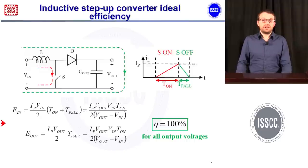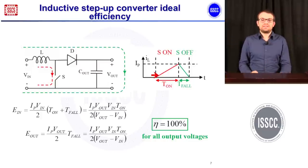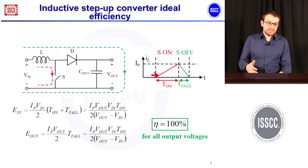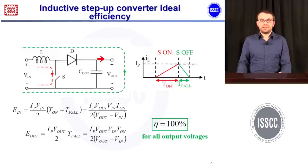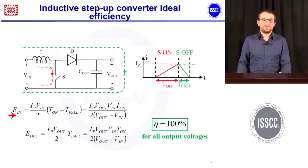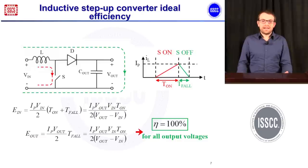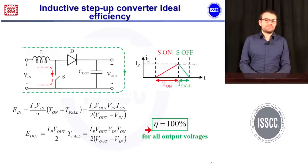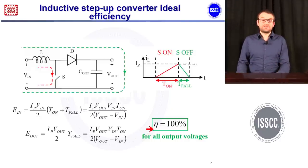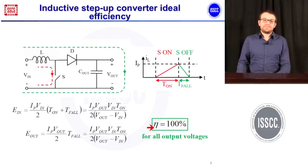An inductive step-up converter is a circuit like this. When you turn on the switch, the inductor current starts increasing linearly as shown in this plot, and then when you turn off the switch, the inductor current decreases linearly and flows through the diode and into the output capacitance. If you calculate the energy put in and the energy taken out of the system — for an ideal case, without any parasitic capacitances on the switching nodes — you get 100% efficiency. Charging an inductance is inherently not a lossy mechanism, which is very nice.